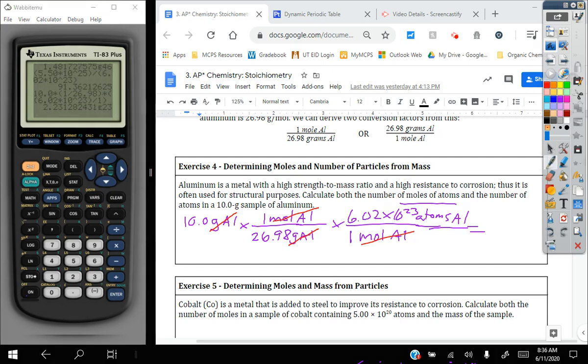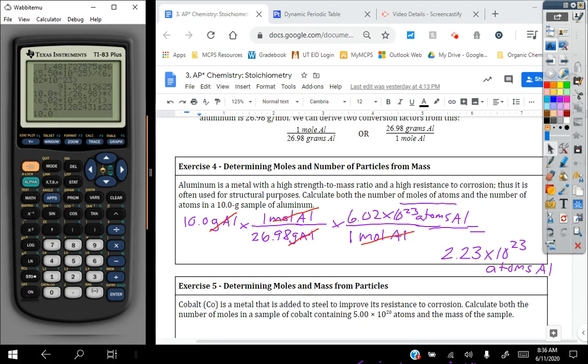And I get an answer of 2.231 times 10 to the 23rd. But I want to pay attention to my sig figs. 2.23 is sufficient. That e is my exponent. Remember that times 10 to the 23rd atoms of Al. Now, again, if you're not comfortable with the fraction set up, you can divide by the molar mass for the first part and then multiply by 6.02 times 10 to the 23rd. Just make sure that's in parentheses and you'll get the same answer of 2.231 times 10 to the 23rd.